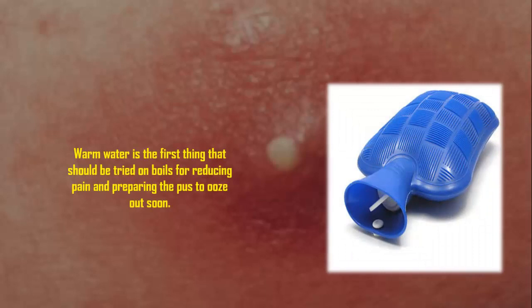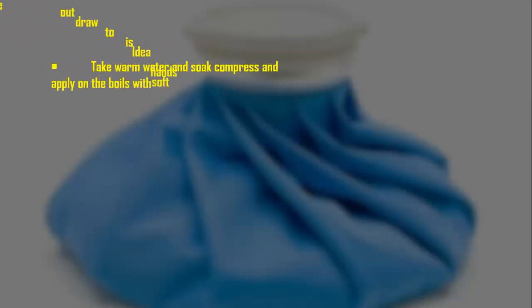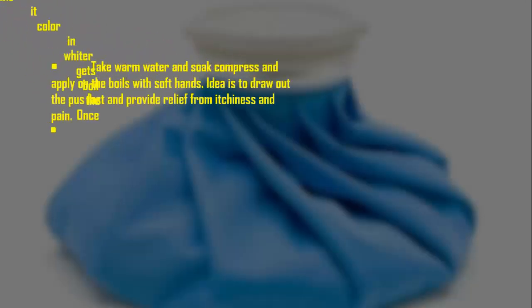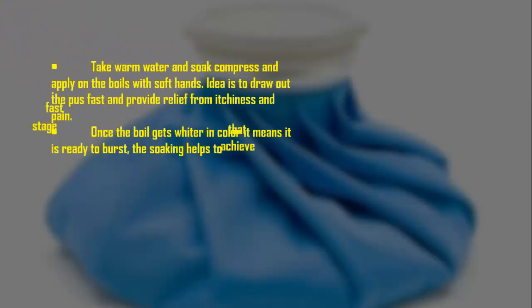Apply three to four times a day until the boil bursts and is cured. Warm water compresses: warm water is the first thing that should be tried on boils for reducing pain and preparing the pus to come out soon. Take warm water, soak a compress, and apply on the boil with soft hands. The idea is to draw out the pus fast and provide relief from itchiness and pain.